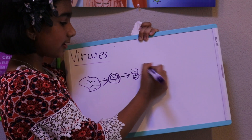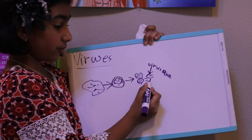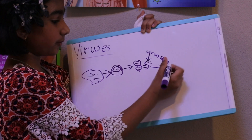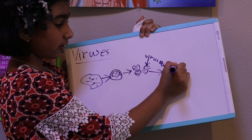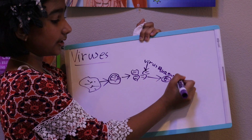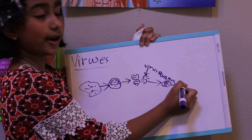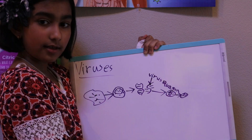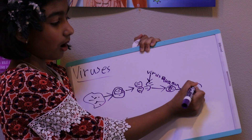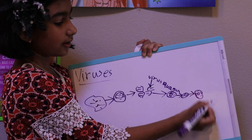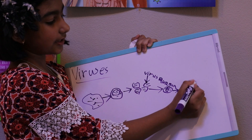The virus attaches its own RNA to your cell's RNA. So when the cell replicates its RNA, the virus RNA is in that cell's RNA. When this cell replicates again, the RNA from the virus replicates its own RNA too. All the cells with the virus RNA get overloaded as the virus replicates inside them.